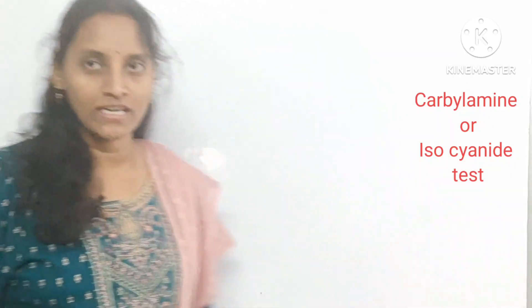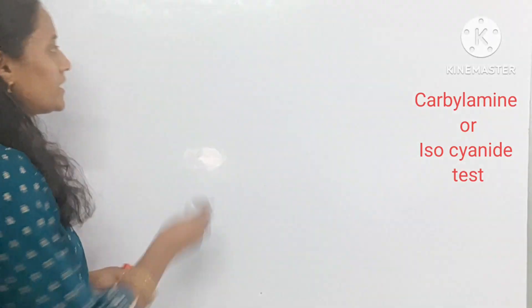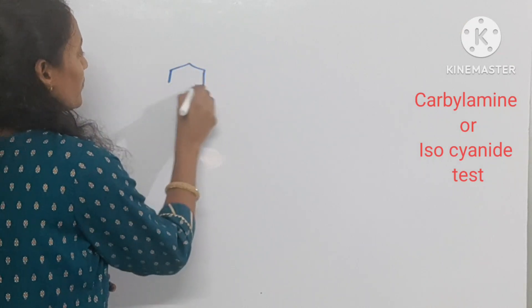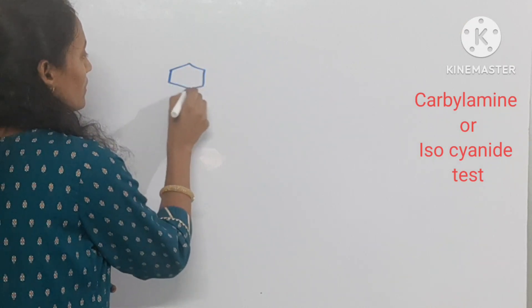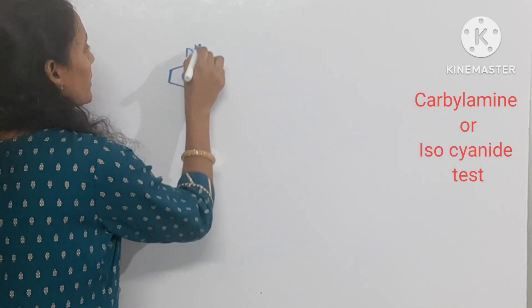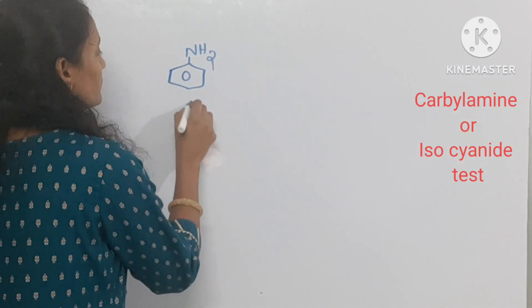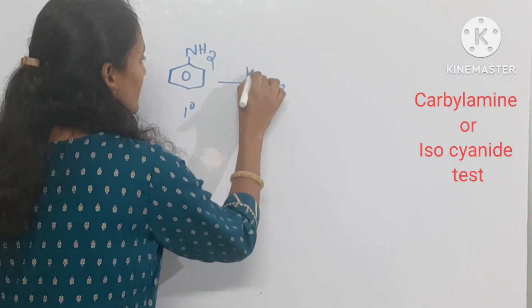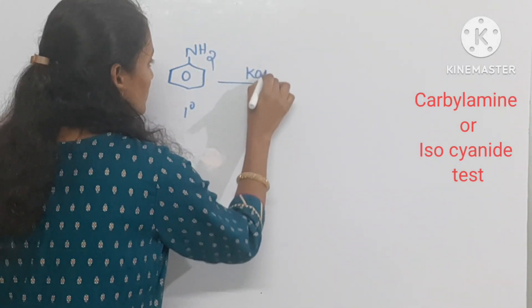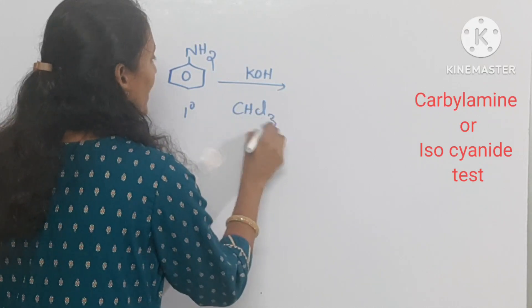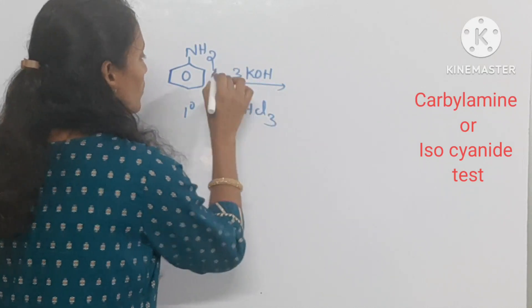To get a clear idea, let's take an example. Here I am taking aniline, which is a primary amine. This is going to react with chloroform in the presence of alcoholic KOH.